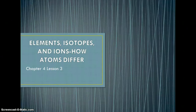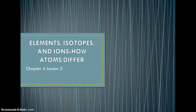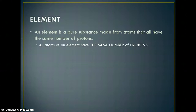Welcome to Chapter 4, Lesson 3. This is the last lesson in Chapter 4, dealing with Introduction to Atoms. Today we're going to talk about elements, isotopes, and ions, and how atoms can be different from each other.